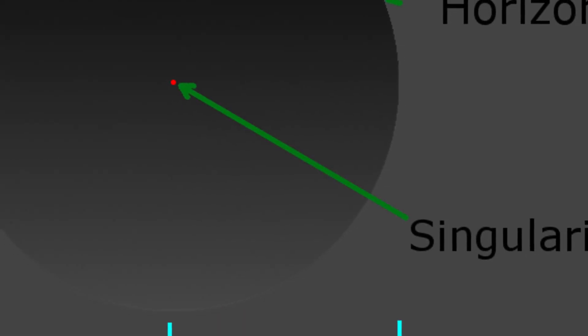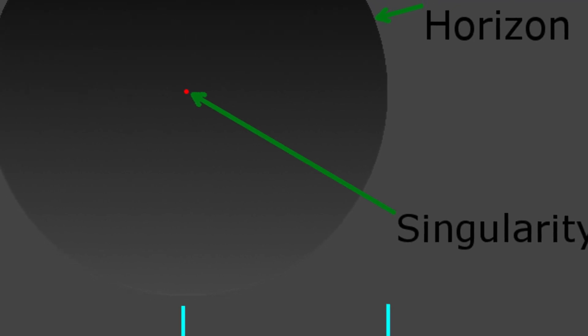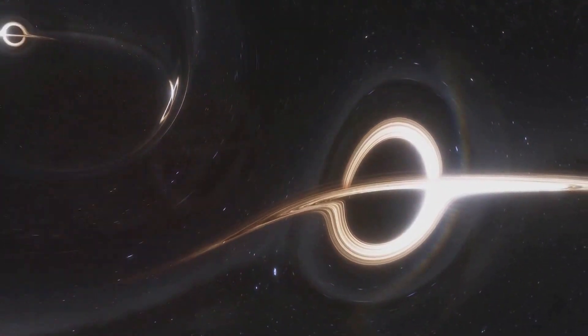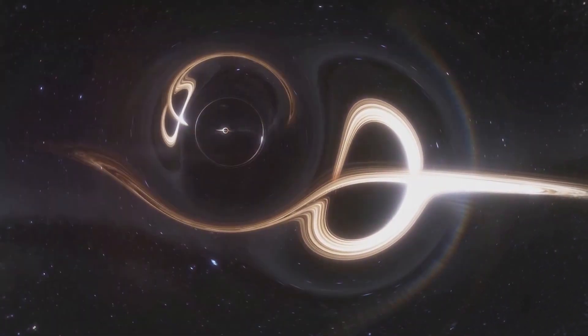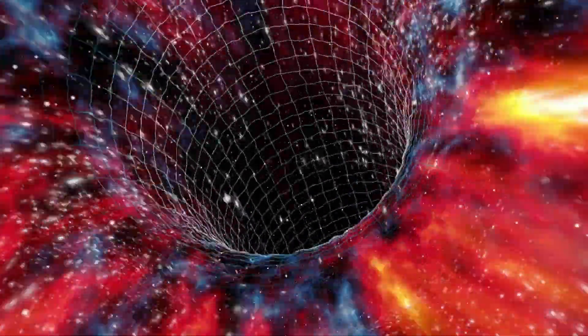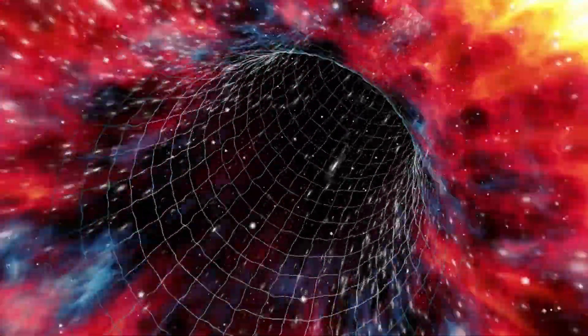This singularity is surrounded by an invisible boundary called the event horizon, beyond which nothing, not even light, can escape the gravitational pull of the black hole. As matter collapses to form a singularity, it creates a gravitational field so intense that it warps the fabric of space-time itself, bending it in such a way that all paths lead inexorably towards the singularity.